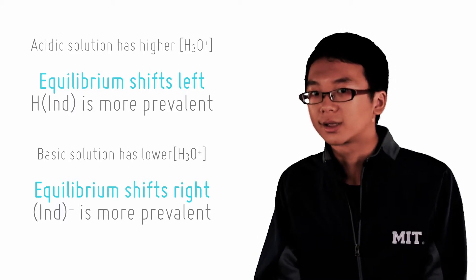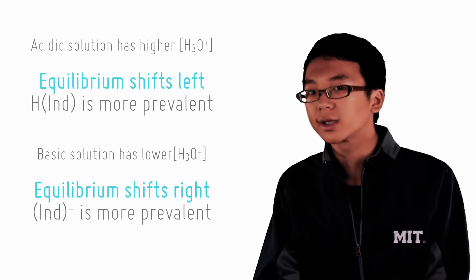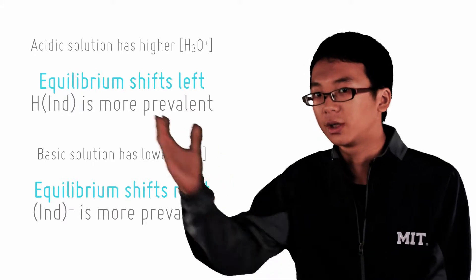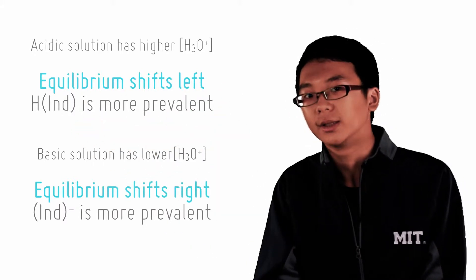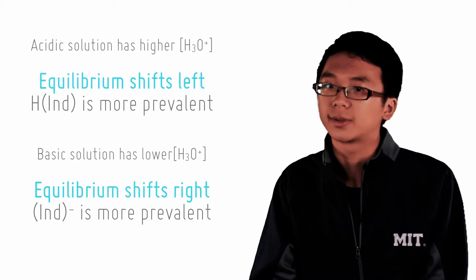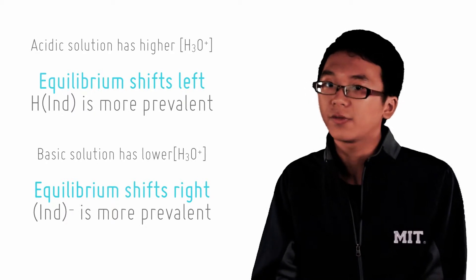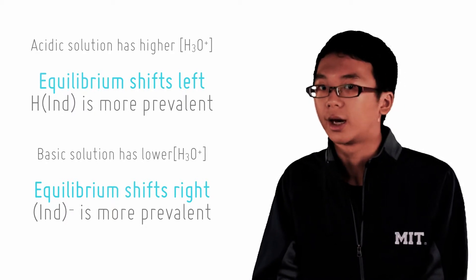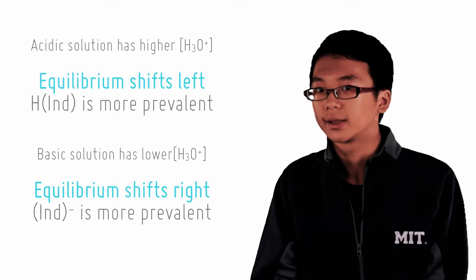If we wanted more of the dissociated form, then we must reduce the concentration of the hydronium ions and shift the equilibrium forward, and this happens in a basic solution. So both forms are always present, but because one form is in a much higher concentration than the other, the solution only appears a certain color.